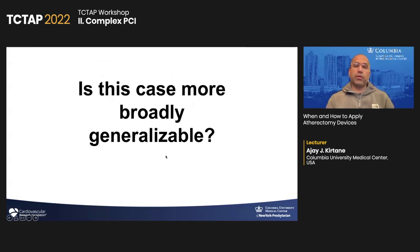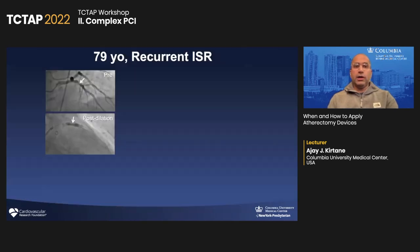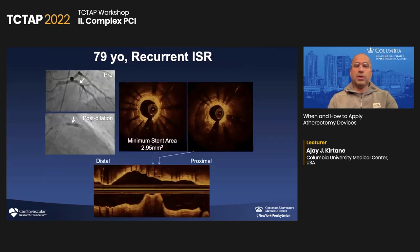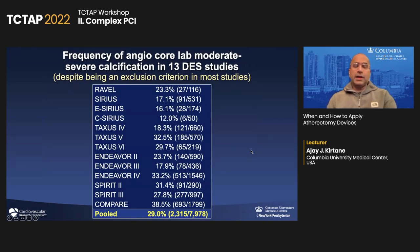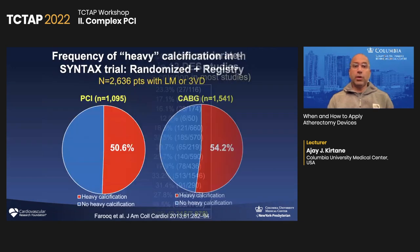Is this case more broadly generalizable? Yes, because in the modern era with more and more calcified lesions, if you don't prep the lesions adequately, we're going to be in these types of situations. Here's another example of classic under-expansion within the stent. For many operators, when they see in-stent restenosis, their next step is to put in another stent — a far worse problem if there's severe under-expansion due to calcification. Even in studies of DES approval where severe calcification was to be excluded, we saw severe calcification in up to a third of cases, meaning operators are not recognizing the extent of calcification.